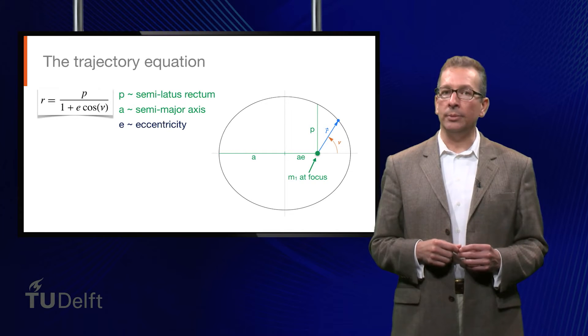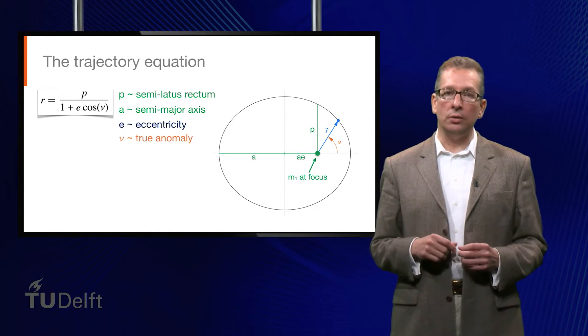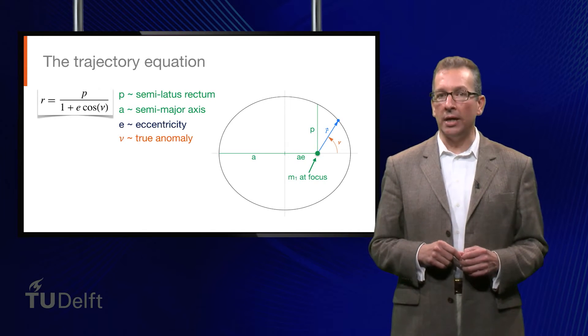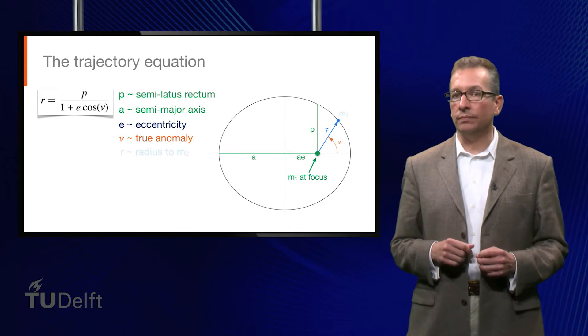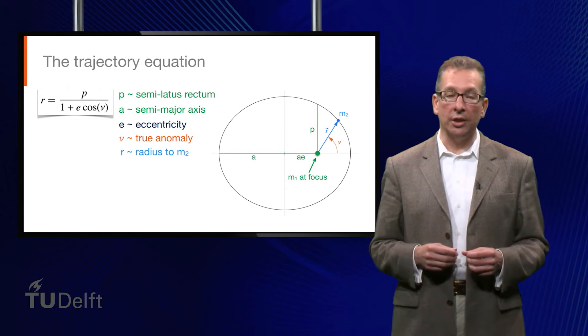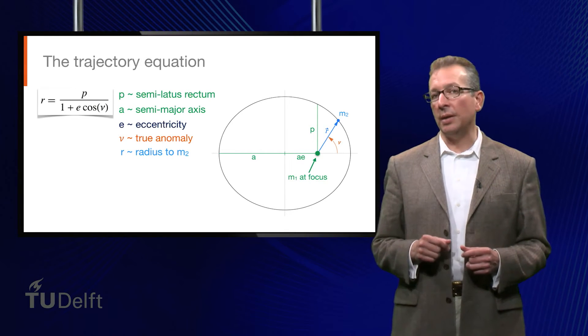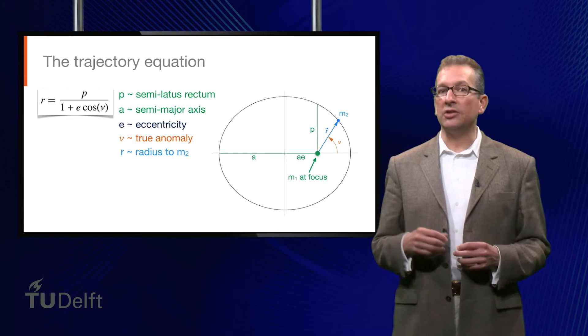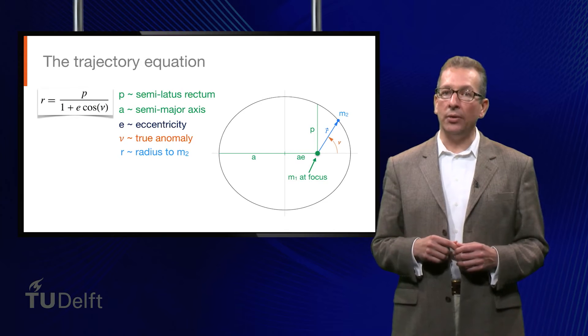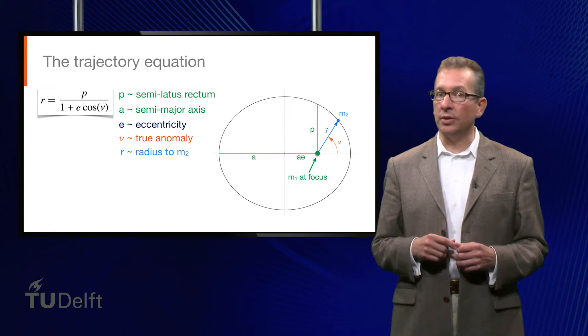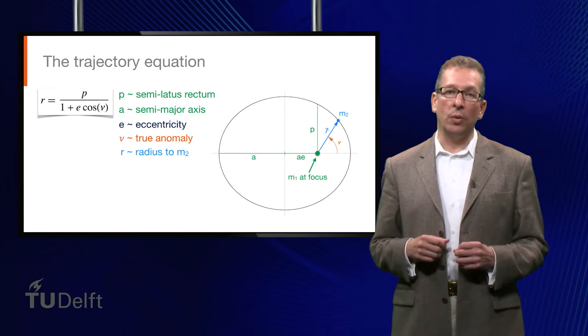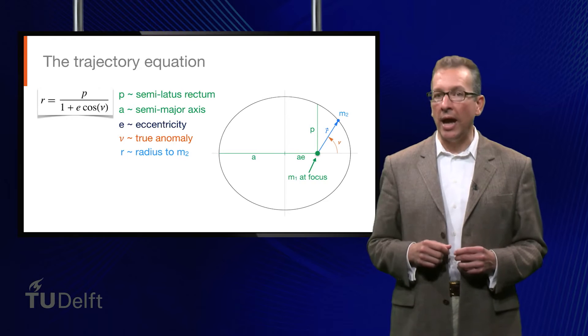The third orbital element is nu, which is called the true anomaly, and this is the angle between the shorter segment of the major axis and the radius vector, which indicates the position of m2, the body whose motion we're actually interested in. You'll notice that the semimajor axis A is currently missing from the trajectory equation. Given that it's one of the Keplerian orbital elements, it would be handy to have it in there as well. So we're going to do a bit of analysis, put A where we want it, and develop a few handy relations along the way.